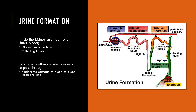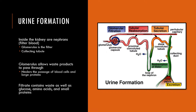The glomerulus receives blood from the renal artery and allows waste products to pass through, but it hinders the passage of blood cells and larger proteins. The filtrate that the glomerulus creates will, in addition to waste, also contain glucose, amino acids, and small proteins that made it through. So we actually have to reabsorb these nutrients that our body needs — the next portion of urine formation is reabsorbing these nutrients.